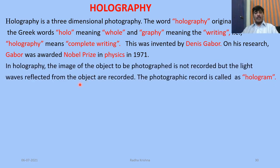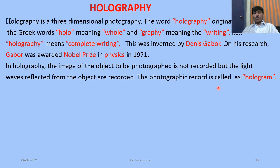In holography, the image of the object to be photographed is not recorded, but the light waves reflected from the object are recorded. The photographic record is called a hologram.